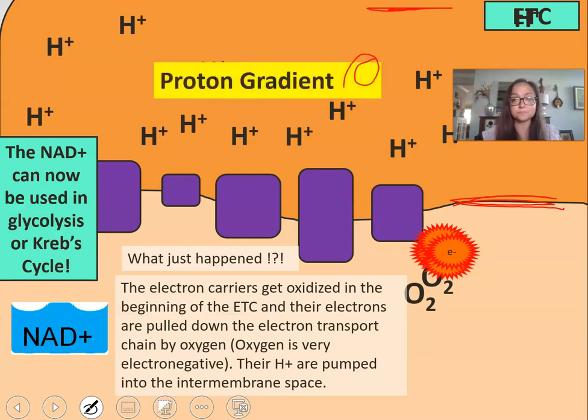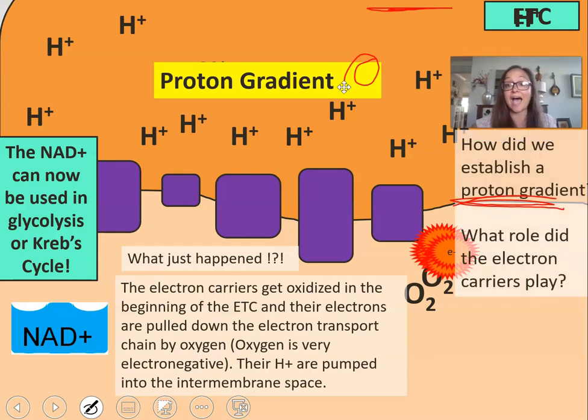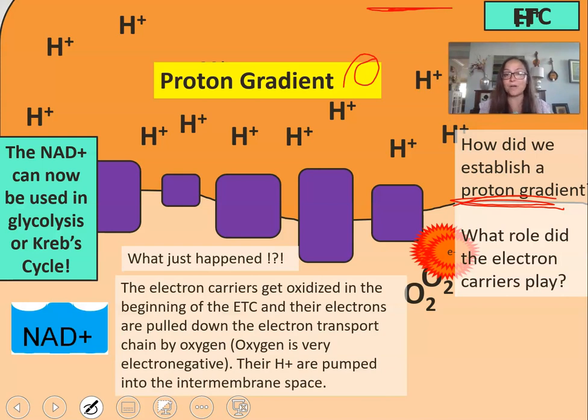Here we have a proton gradient has been established. If you really think about this proton gradient, how did we establish this? What role did the electron carriers play? When the electron carriers were oxidized, they donated electrons into the electron transport chain. As they were passed down the ETC with oxygen being very electronegative, pulling them and attracting and gaining those final electrons, each time the electron is passed from one enzyme to the next, a little bit of energy is used to pump them into that space, establishing that proton gradient.